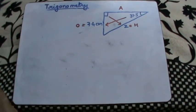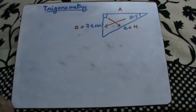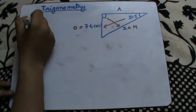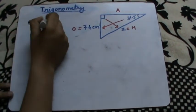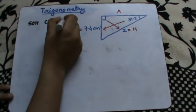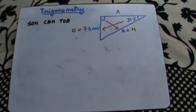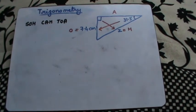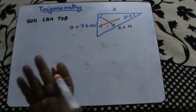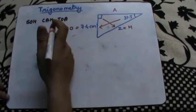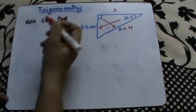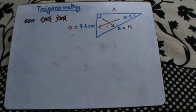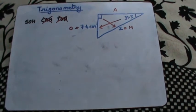I write down the mnemonic SOH CAH TOA. Since there is no information about A, I'm not going to use any function which contains any ratio with A, which means I will not be able to use TOA and COS. So I'm left with the sine function.